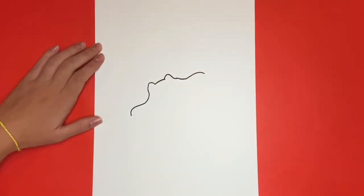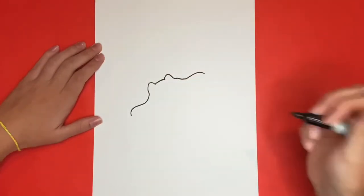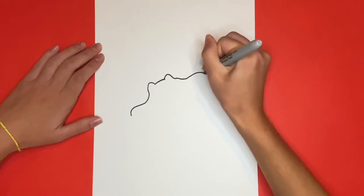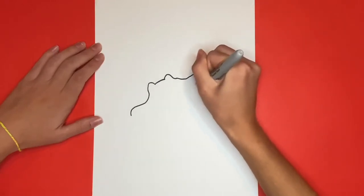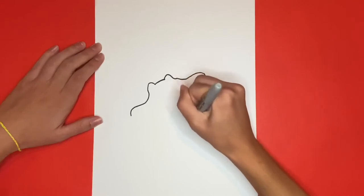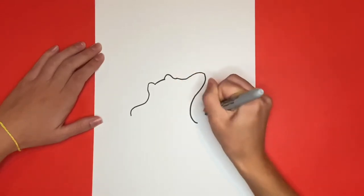Now we're going to start from the right wavy line that we made and we're going to draw a curved line going all the way down for the body of the stingray and into the tail. The stingray's tail will come to a point.